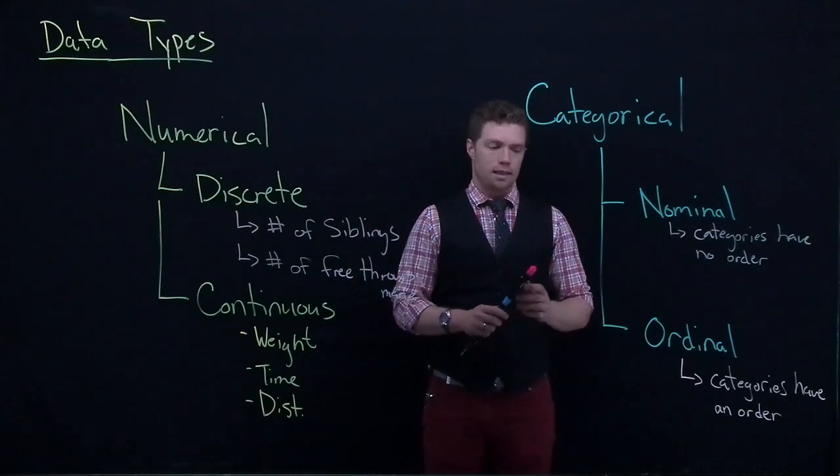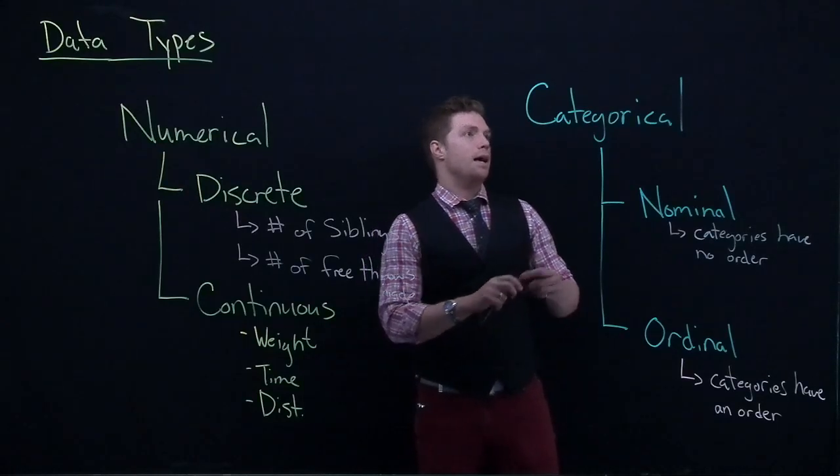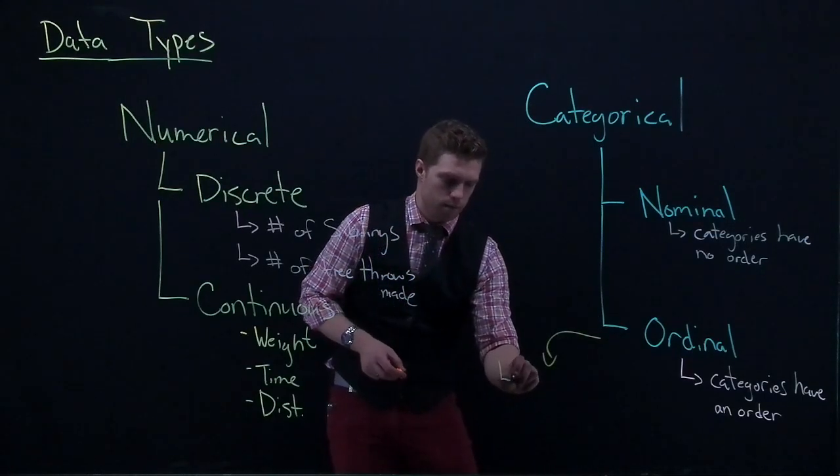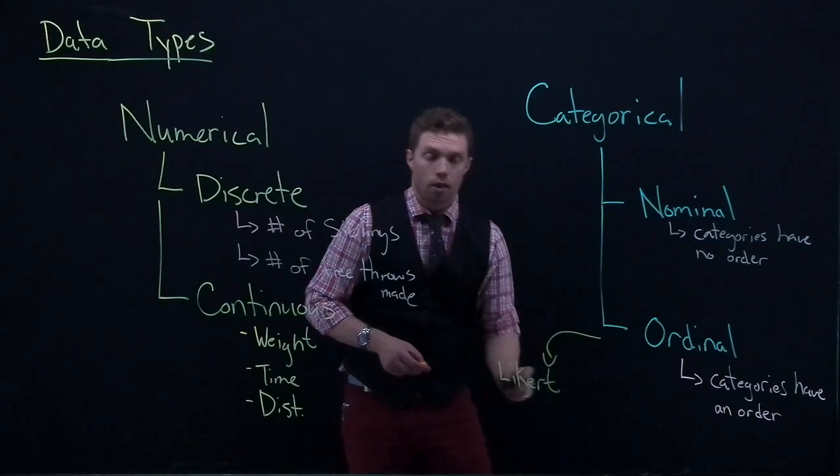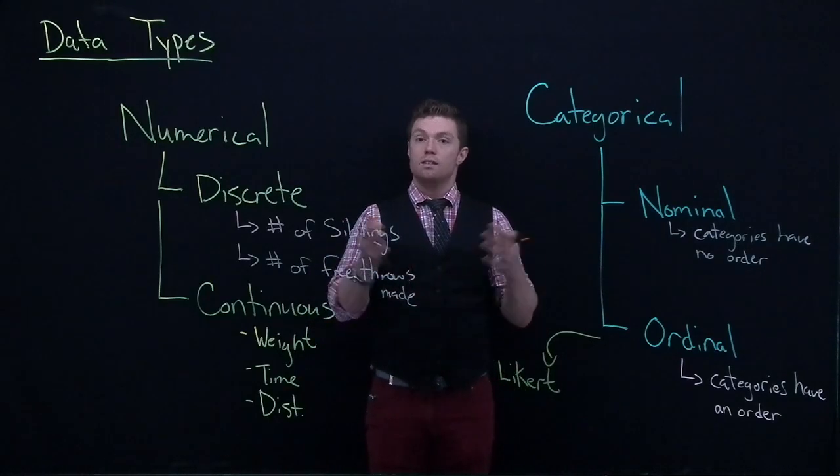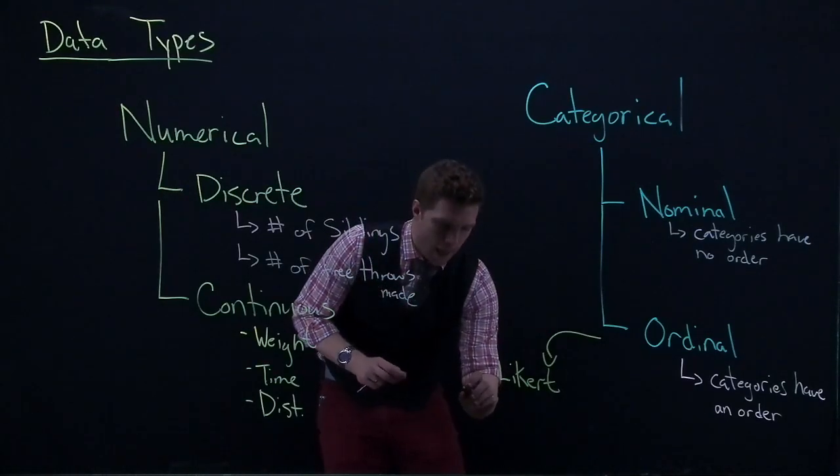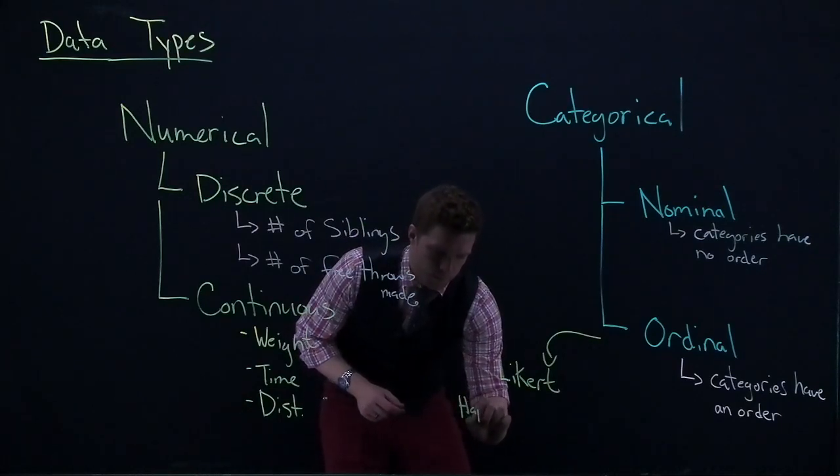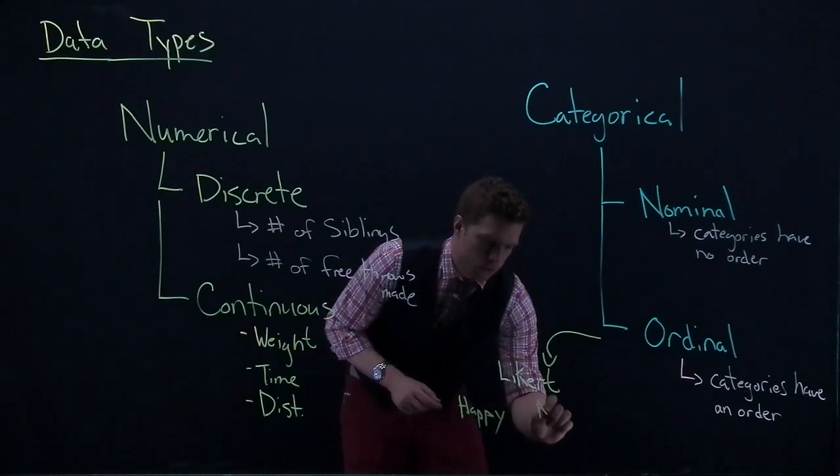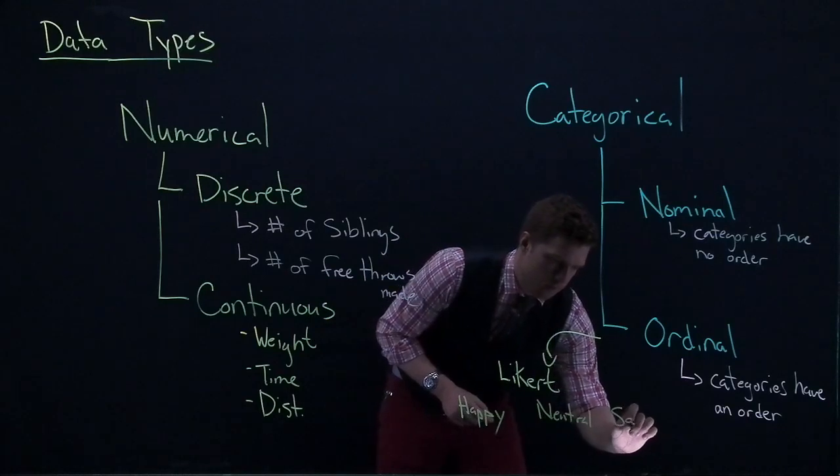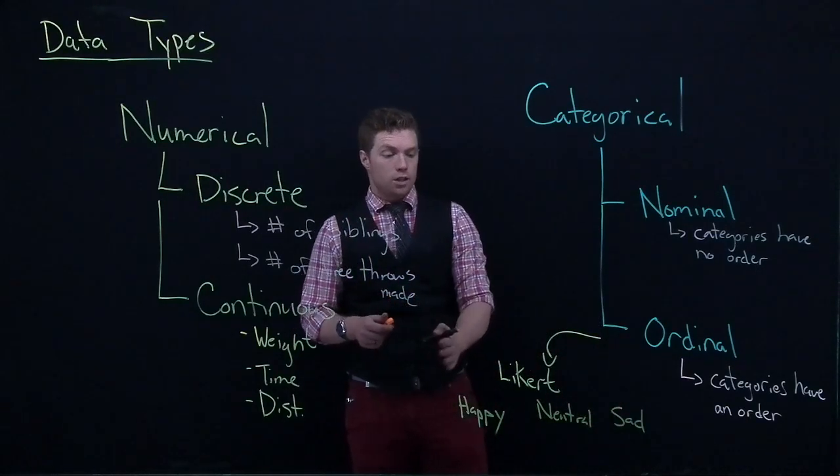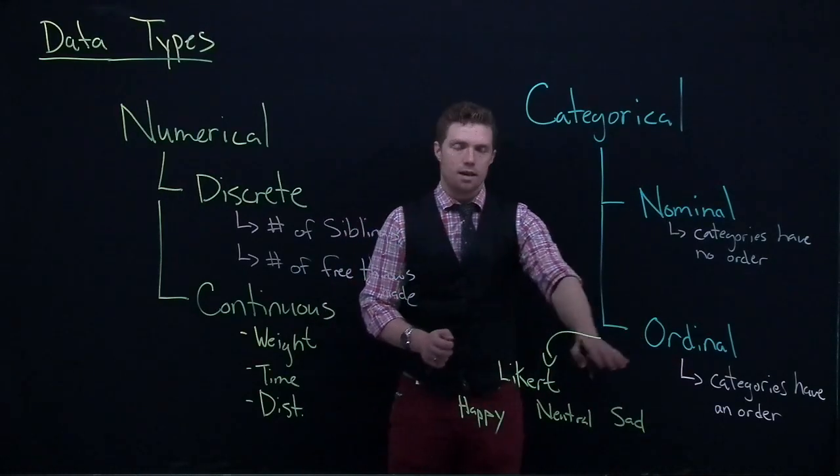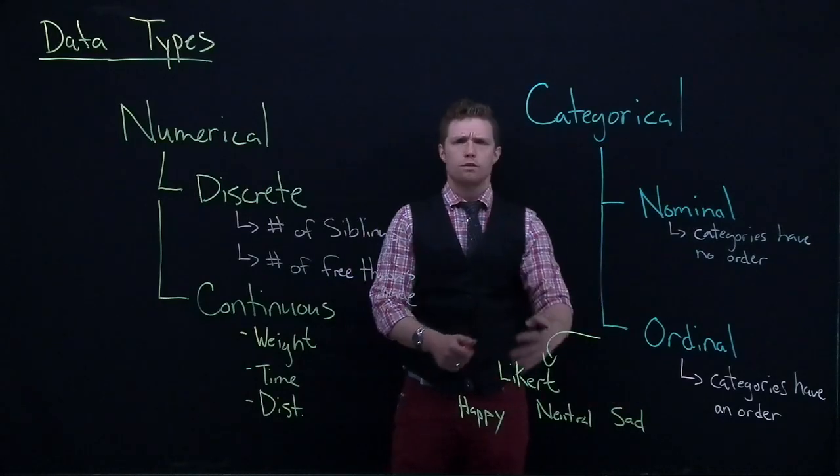Another one for ordinal that we use a lot is called a Likert scale. So a Likert scale is sometimes things that we want to measure on some sort of magnitude scale. Maybe we say we have happy, neutral, and sad. This would be a Likert scale. It actually helps us when we keep it in this order—there's some sort of linear progression between happy and sad. Those are kind of some ordinal ideas where there is a fixed order that we need to keep those categories in.